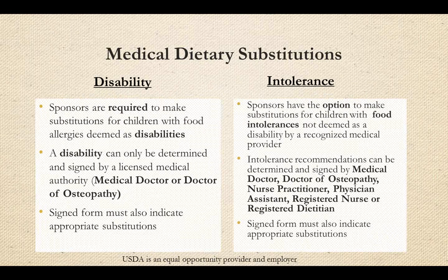Often there is confusion around the term disability and how it is related to food allergies and substitutions in child nutrition programs. The difference between what is considered a food allergy or intolerance and a disability has a very specific definition when it comes to USDA sponsored child nutrition programs. Civil rights requirements provide guidance on discrimination issues as they relate to disabilities. Medically noted disabilities differ from medically documented food intolerances. Sponsors are only required to make substitutions for medically documented disabilities, and have the option to substitute for allergies or intolerances. Sponsors must keep all medical documentation when noting disabilities and making substitutions.